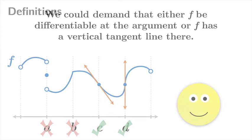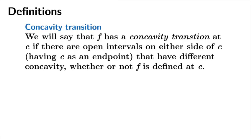So I propose that we make the following definitions. First, let's define something called a concavity transition, a very loose definition, a weak definition. We will say that f has a concavity transition at c if there are open intervals on either side of c having c as an endpoint that have different concavity whether or not f is defined at c.